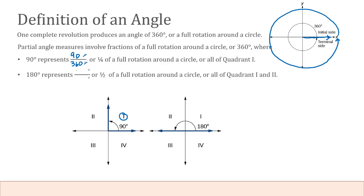180 degrees would represent 180 out of 360 degrees. Again, the degree units cancel and the fraction reduces to one half of a full rotation. One half of a full rotation around a circle takes us through not only quadrant one, but also quadrant two.